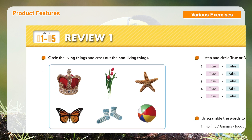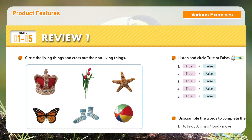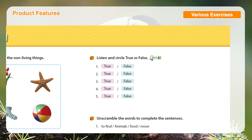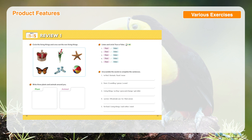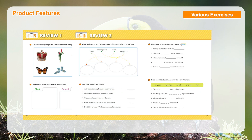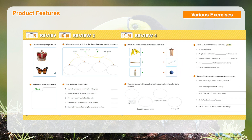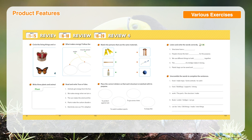In every five units, students are presented with a review section, which will help them review the main concepts in the preceding five units. This section also contains a dictation exercise, which will improve students' listening and spelling skills of words in a sentence format.